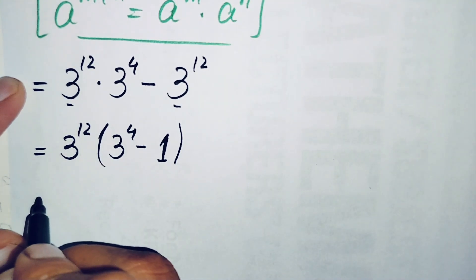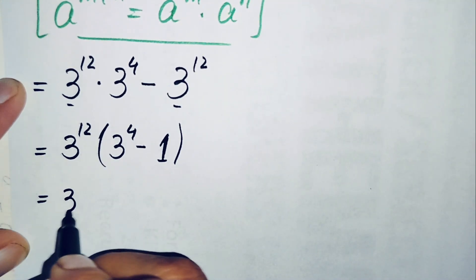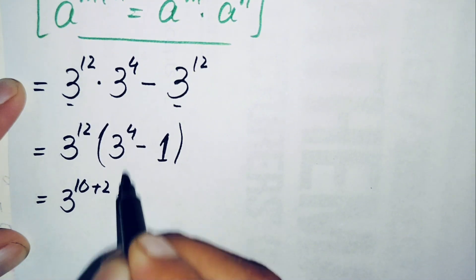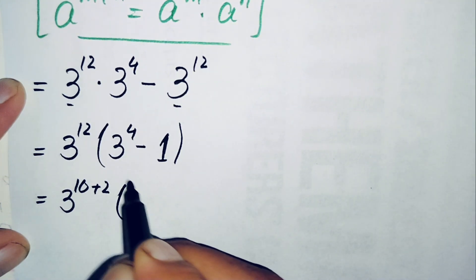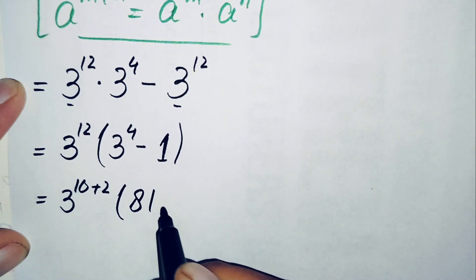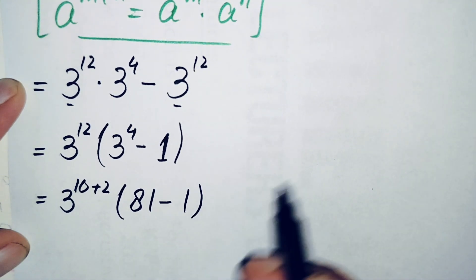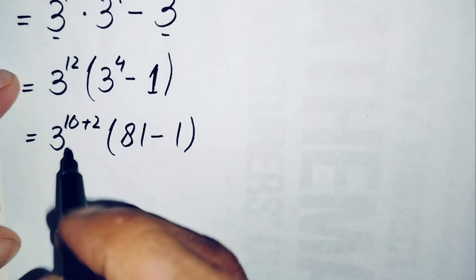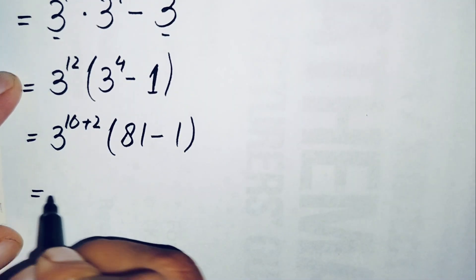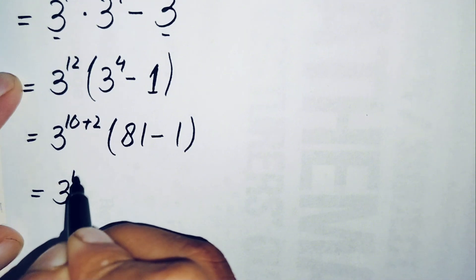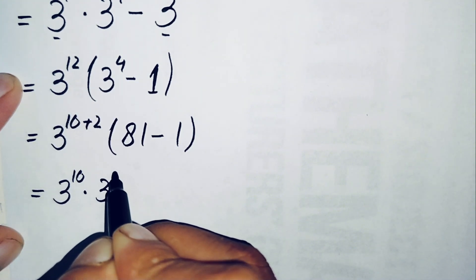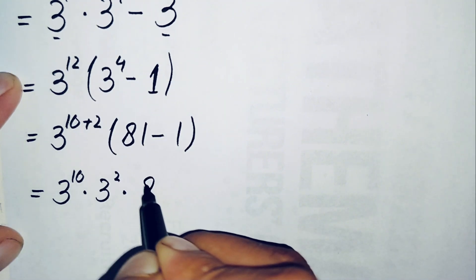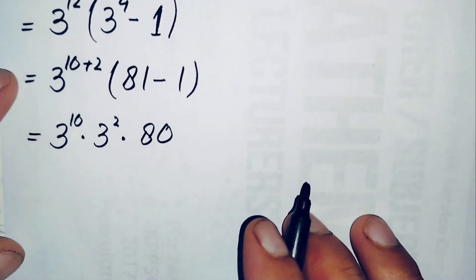We can write 3 raised to power 12 as 3 raised to power 10+2, and 3 raised to power 4 equals 81, so 81 minus 1 is 80. Applying the product property again, 3 raised to power 10+2 becomes 3 raised to power 10 times 3 raised to power 2, times 80.